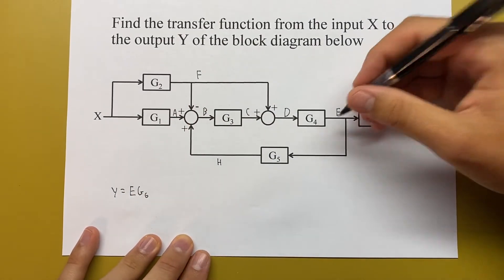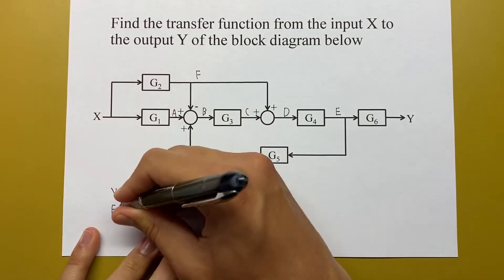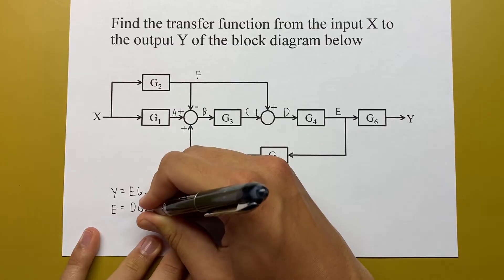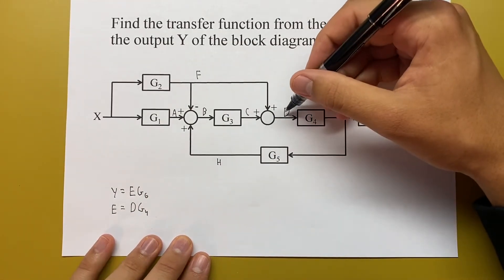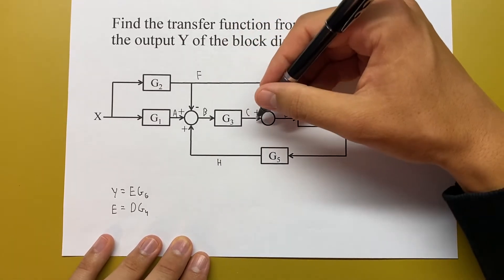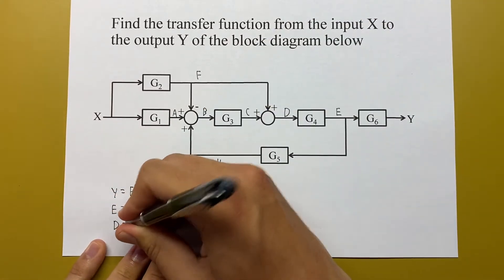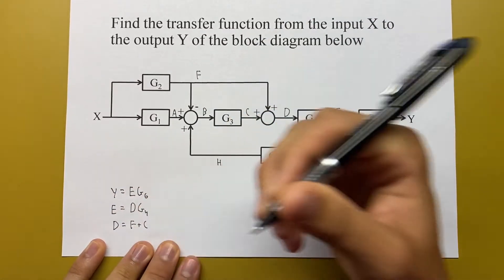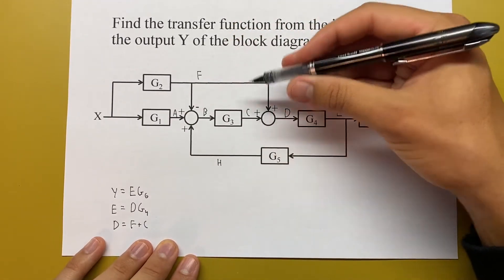What's E? E is just D times G4, so E is D G4. Now we have to solve for D. D is just these two signals combined, so that's going to be C plus F, or I'll write F plus C. Now we can either solve for C or F.